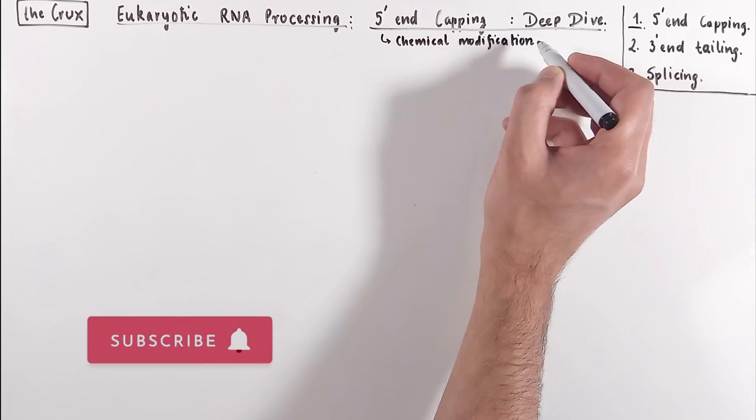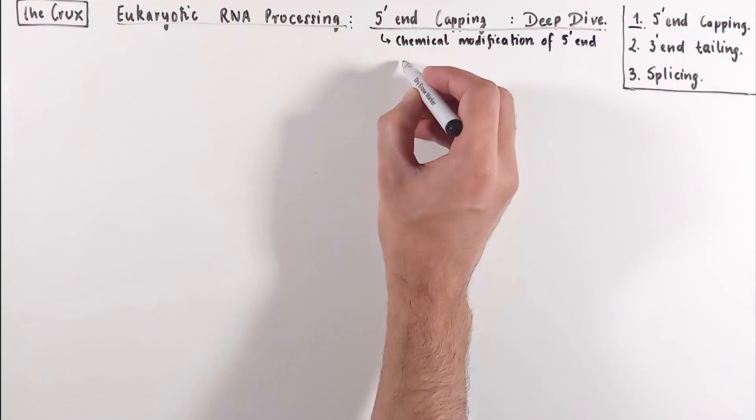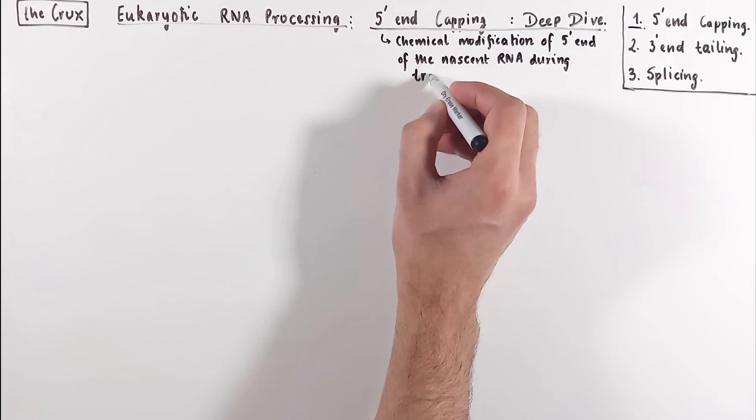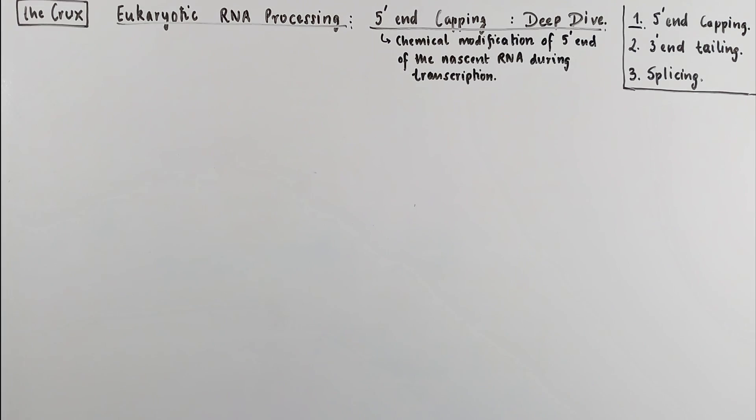Simply put, a 5' capping is just a chemical modification that occurs at the 5' end of the nascent RNA.